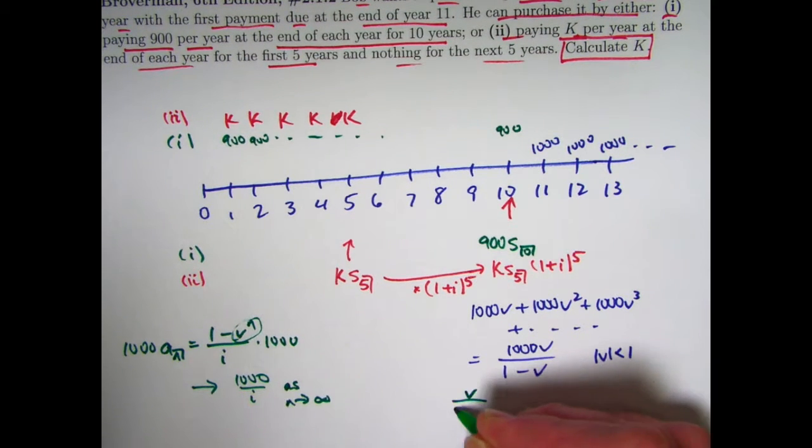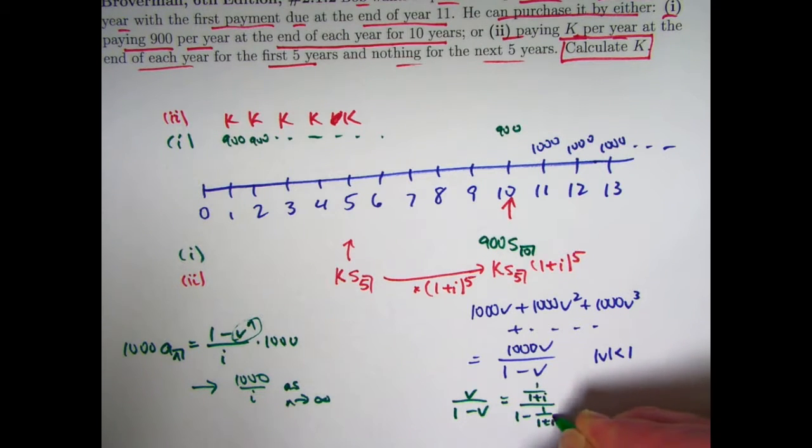Evidently, this equals 1000 over i. Is that really true? You might want to double check that. V over one minus v should equal one over i. Replace v with one over one plus i.